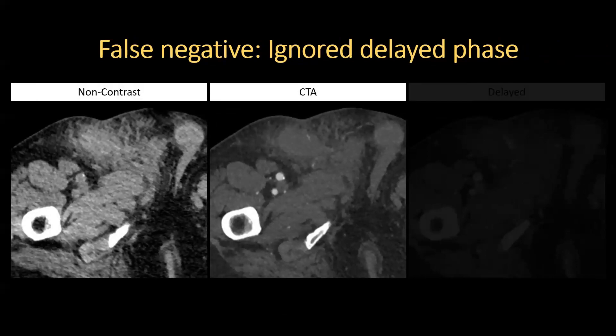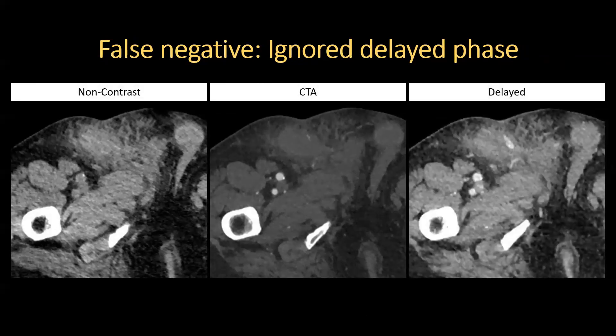This next case is a 70-year-old man with a groin hematoma following endovascular abdominal aortic aneurysm repair. Sometimes we focus on the arterial phase and ignore the delayed phase. In this case, the bleed is very subtle on the arterial phase. On the delayed phase, however, active bleeding into the groin hematoma is very obvious. Looking back at the CTA, the subtle focus of contrast extravasation could be mistaken for a traversing blood vessel. I can't stress enough the importance of looking at all of your phases.